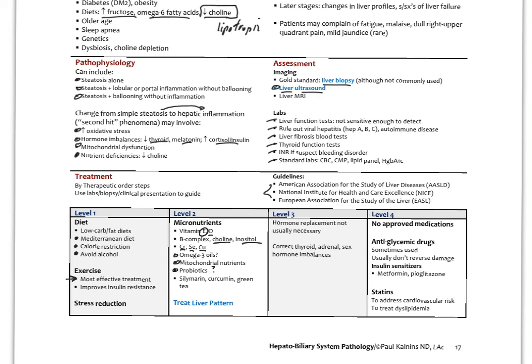Some of the classic liver herbs: milk thistle, turmeric, green tea. I won't go into that here but we would of course do a pattern differentiation and treatment from the perspective of Chinese medicine. Usually any sort of hormone imbalances could be corrected just by correcting the patterns. But if you need thyroid replacement, that would be important. There are currently no approved medications.